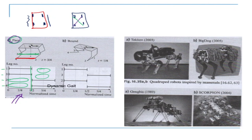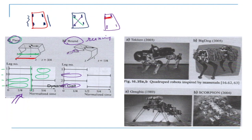The bound gate is used for running or jumping. In the bound gate, the front legs (three and four) are in air while the rear legs are on the ground, then all four are on the ground, then the rear legs go in air. So only the front legs or the back legs are in air at any given time — this is the bound gate, and its gait diagram shows this front-back alternation.